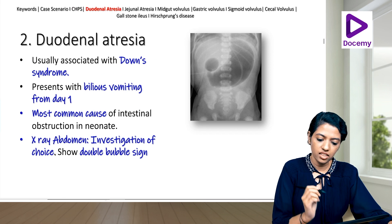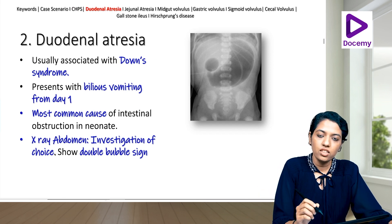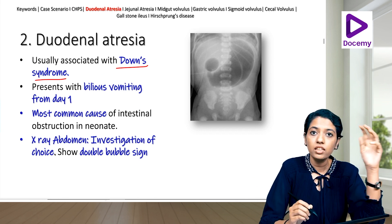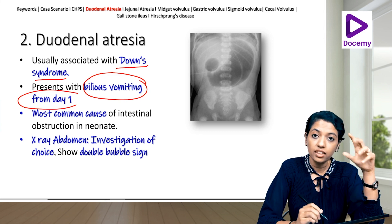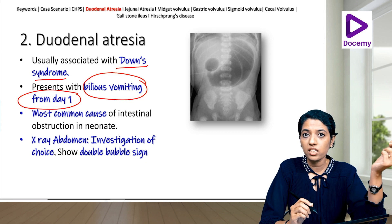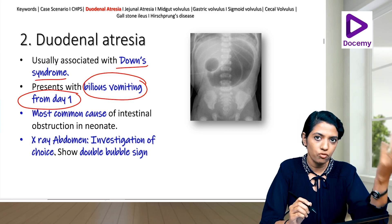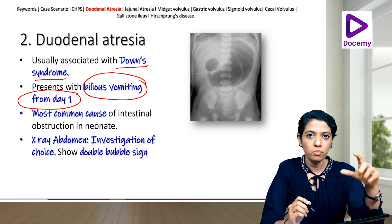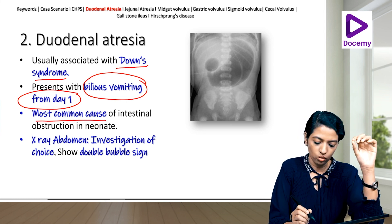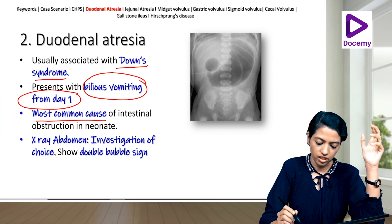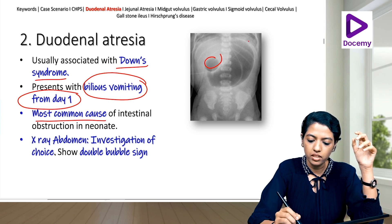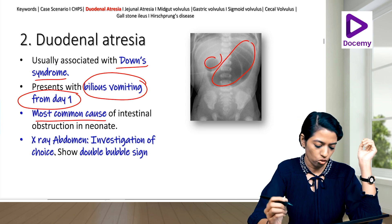Coming to duodenal atresia: it is usually associated with Down syndrome as in our case, and presents with bilious vomiting on day one. It is the most common cause of intestinal obstruction in a neonate. X-ray abdomen is the investigation of choice and shows the double bubble sign.